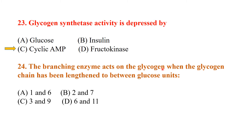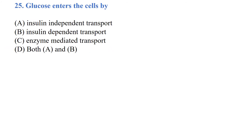The branching enzyme acts on glycogen when the glycogen chain has been lengthened to between 6 to 11 glucose units. Glucose enters the cells by insulin-independent transport, insulin-dependent transport, enzyme-mediated transport, or both A and B — both A and B is the best answer.